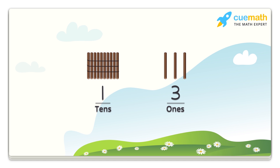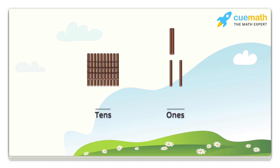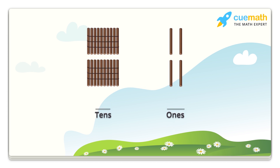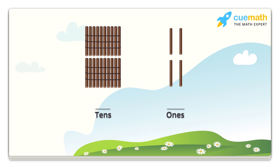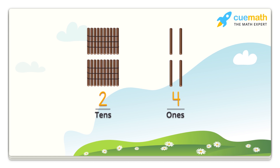Two, and four in the ones place. Two tens make twenty. Hence, there are twenty and four — a total of twenty-four sticks.